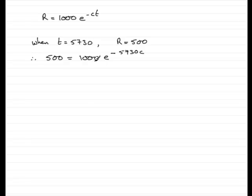Now what do we want to do next? Need to get rid of this thousand, so I'm going to divide both sides by a thousand. So we'd have 500 divided by a thousand, which is a half or 0.5 and that's going to leave me with E to the power minus 5,730 C.